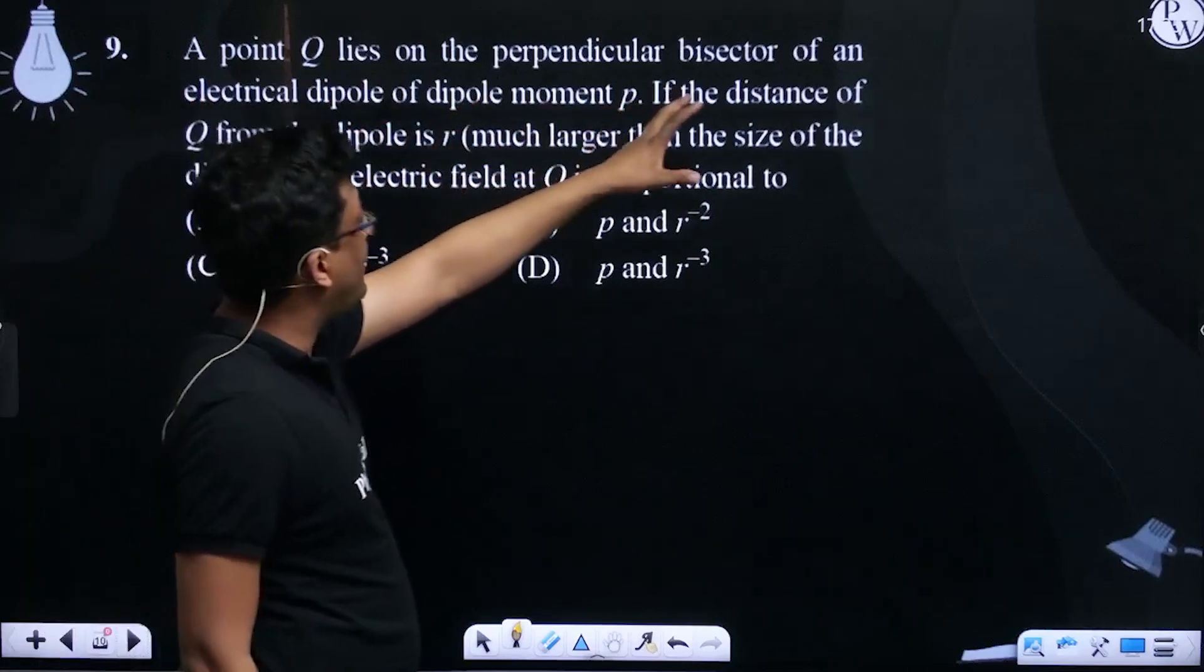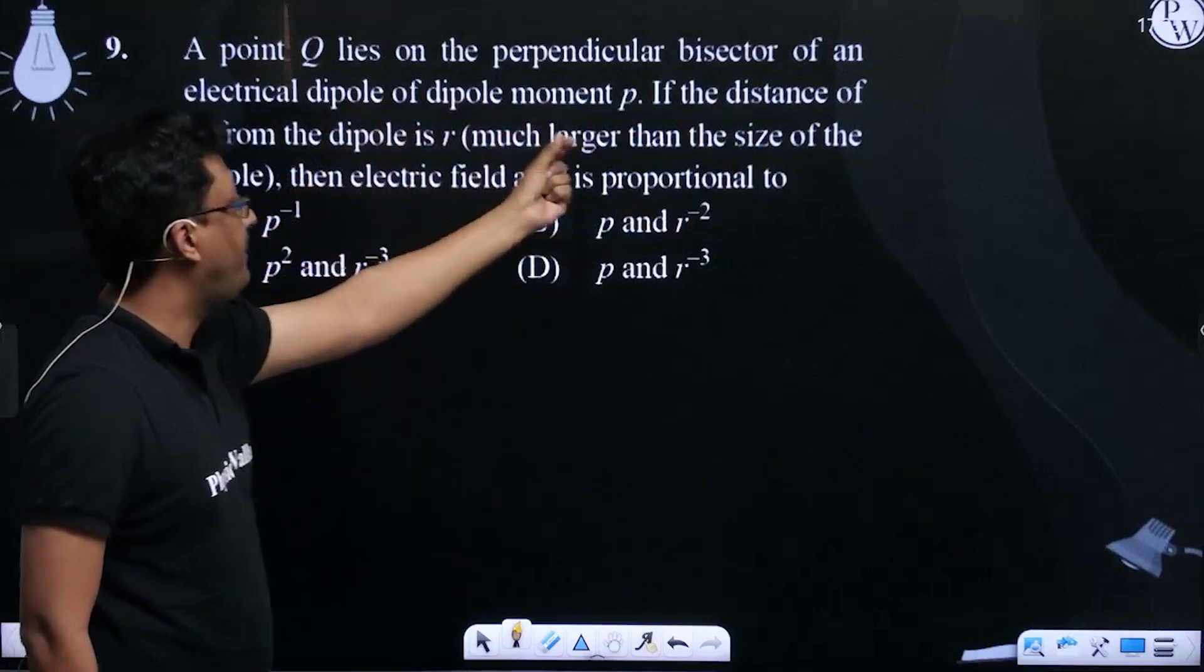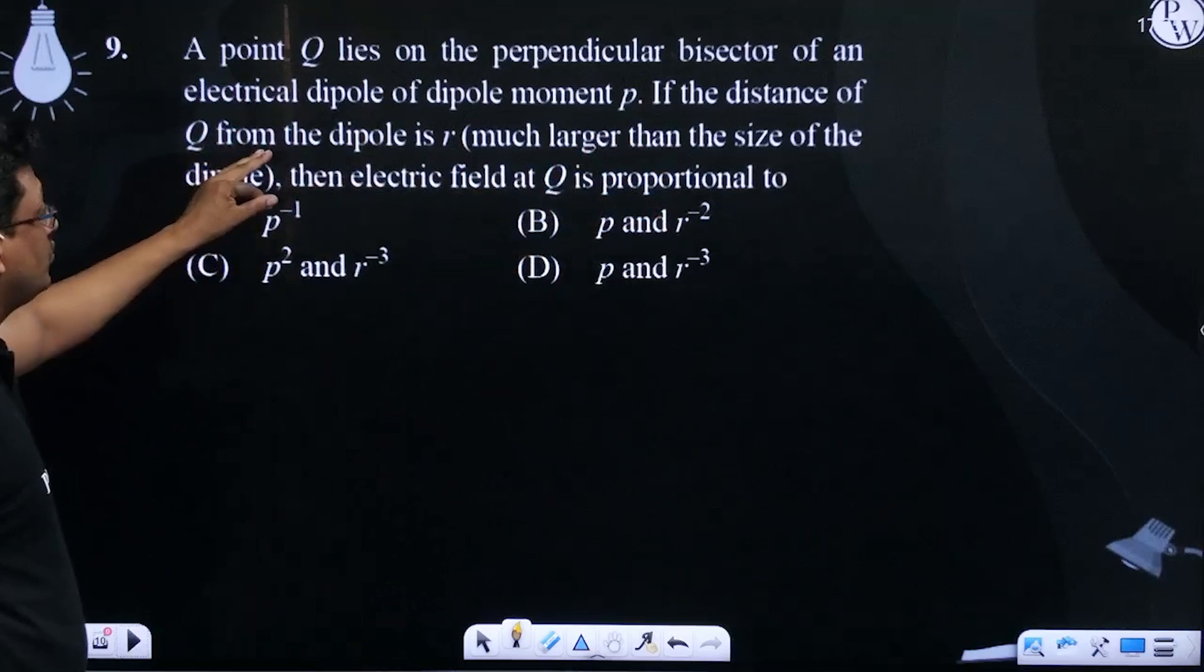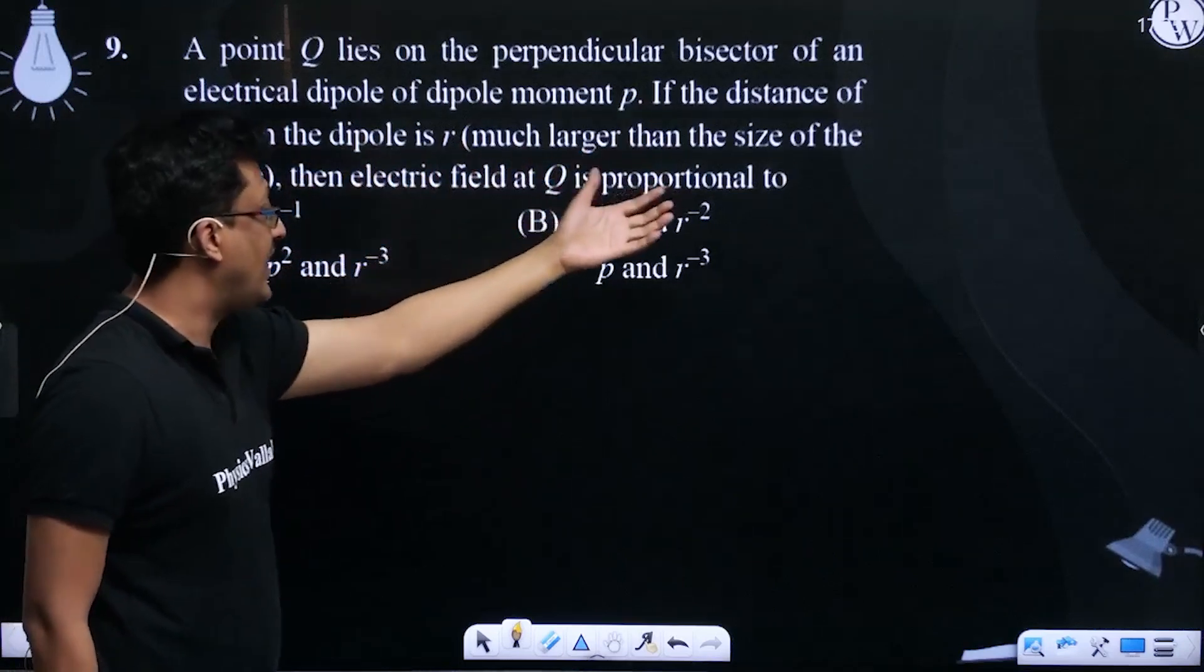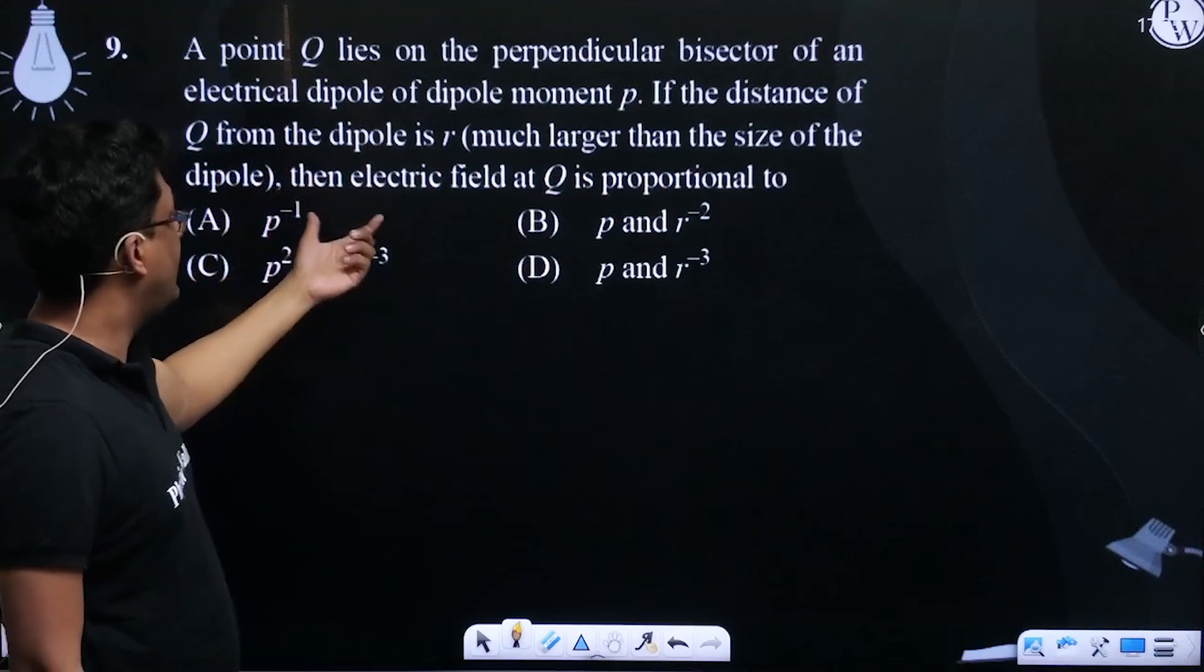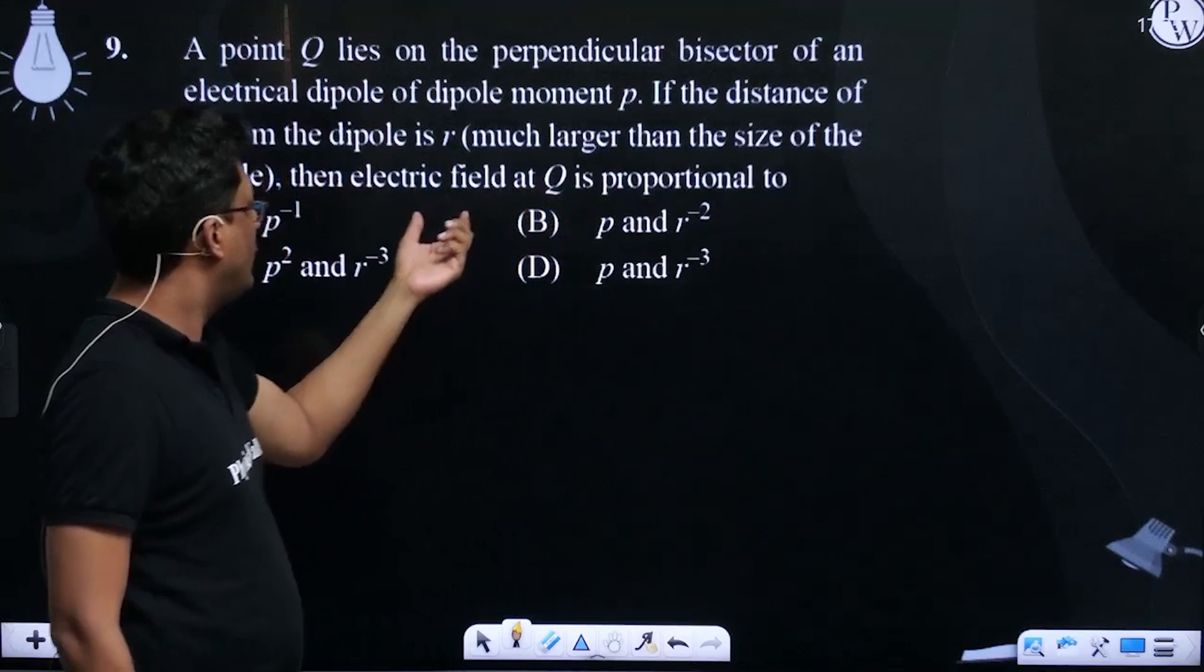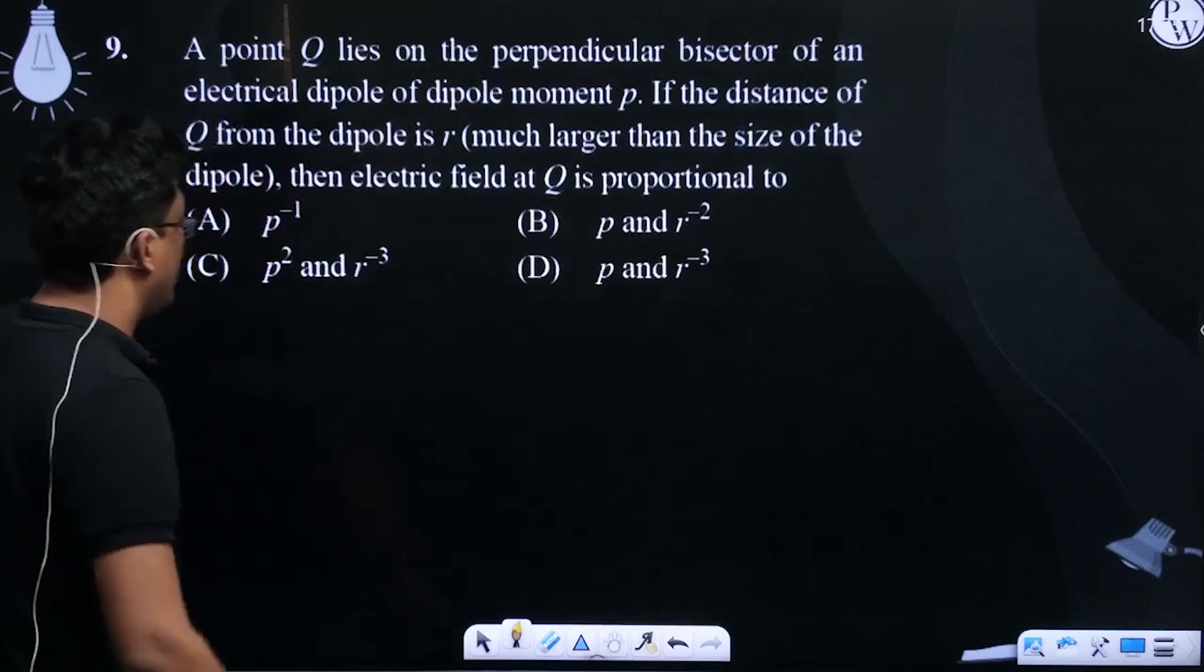A point Q lies on the perpendicular bisector of an electric dipole of dipole moment P. If the distance of Q from the dipole is R, much larger than the size of the dipole, then the electric field at Q is proportional to P.